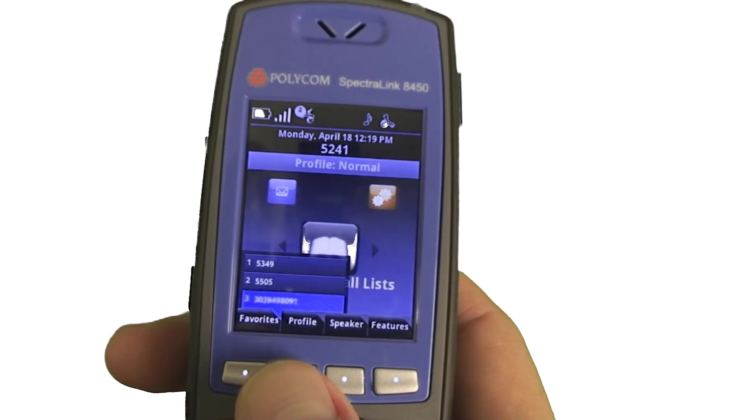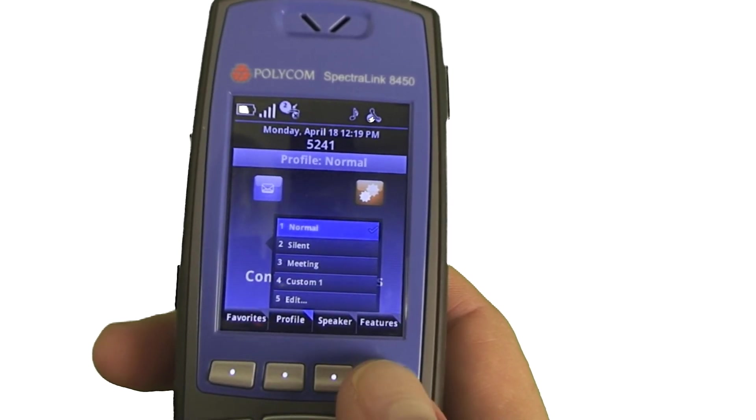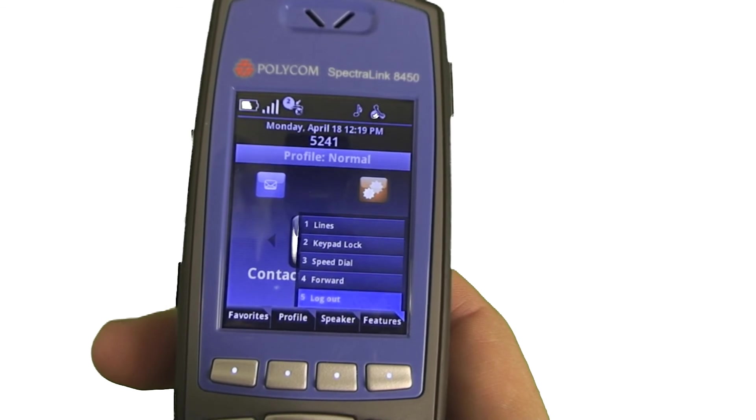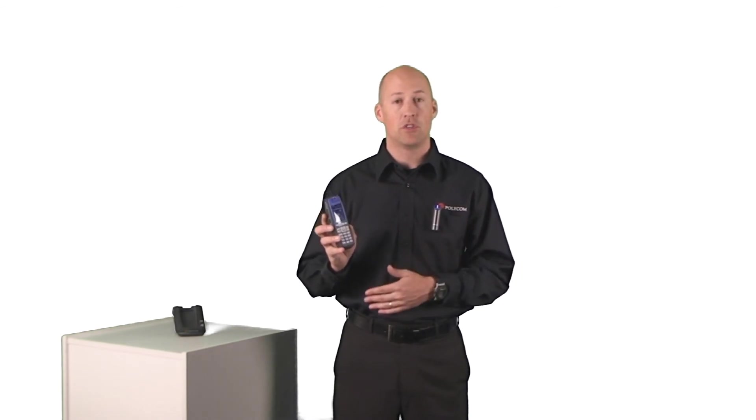I look down here for my favorites and you can see there's a different number stored of my favorites, you can see my features are now a different feature list that's stored. So just to give you some example of how this phone can be changed from one user to the next as we go throughout the day in a shift based environment.